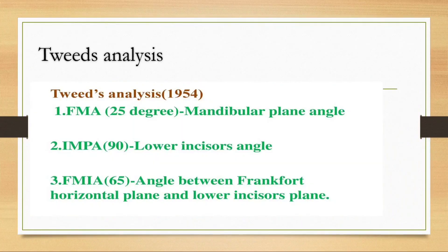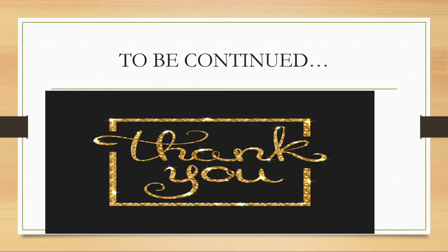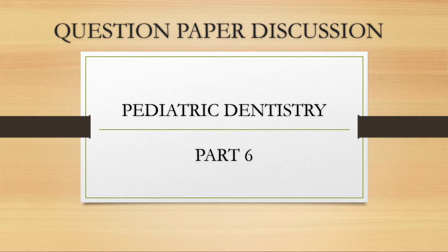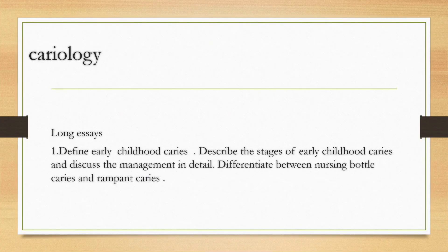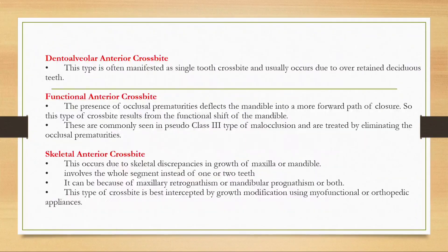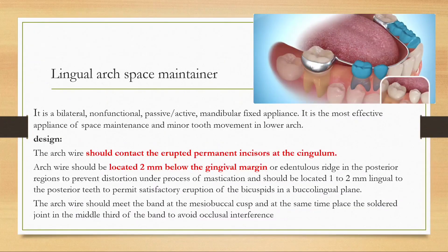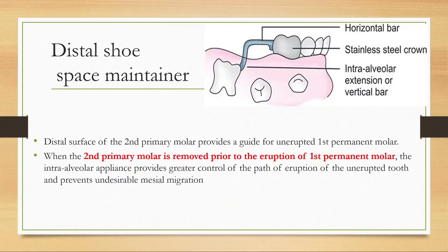Tweed's analysis, part of cephalometric analysis, involves a triangle of FMA, IMPA, and FMIA angles totaling 180 degrees. The FMA angle (mandibular plane angle) is 25 degrees; IMPA (lower incisor angle) is 90 degrees; and FMIA (angle between the Frankfort horizontal plane and the lower incisor plane) is 65 degrees. That covers the orthodontic part of the pediatric dentistry questions. The sixth session will cover cardiology and other topics. The most confusing parts are the distal shoe, band and loop, and lingual arch appliances.